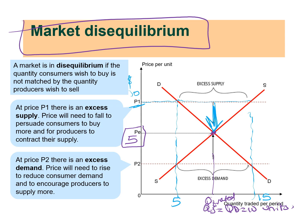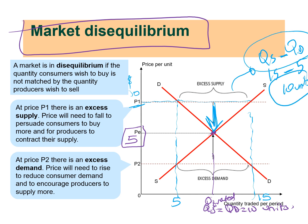The price will need to fall to persuade consumers to buy more and for producers to contract their supply — there will be a movement along the supply curve. At $10, quantity supplied was 15 and quantity demanded was 5, so I have a surplus of 10 units. I subtracted quantity supplied minus quantity demanded; if you get a positive answer, it means you have excess supply, or a surplus.